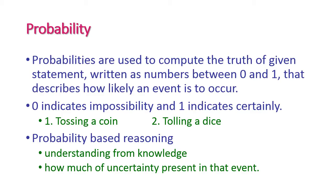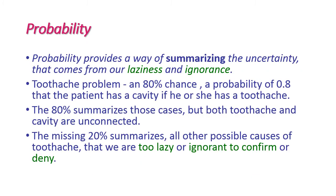Probability provides a way of summarizing the uncertainty that comes from our laziness and ignorance. Laziness means failure to enumerate expressions, quantifiers, and so on. Ignorance is a lack of relevant facts, initial conditions, and so on. In our toothache problem, we might not know for sure what affects a particular patient, but we believe there is an 80 percent chance — a probability of 0.8 — that a patient has a cavity if they have a toothache. The missing 20 percent summarizes all other possible causes of toothache that we are too lazy or ignorant to confirm or deny.